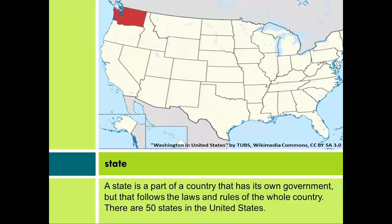State. A state is a part of a country that has its own government, but that follows the laws and rules of the whole country. There are 50 states in the United States.